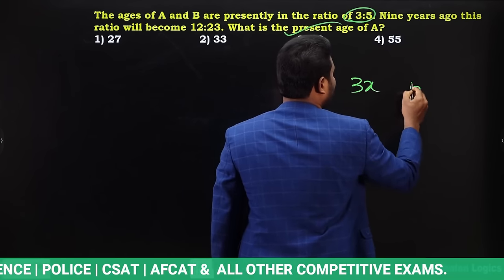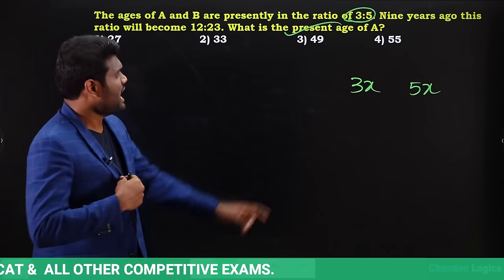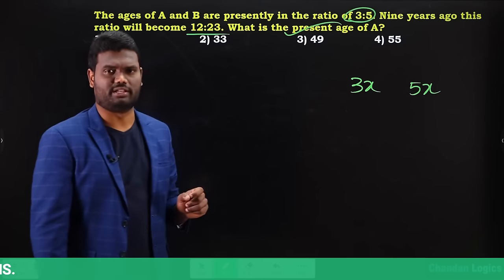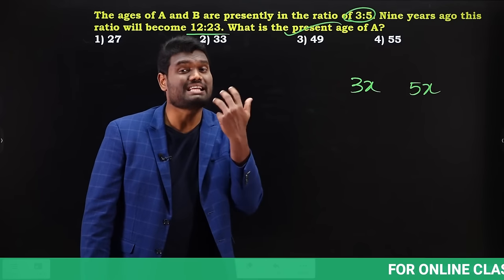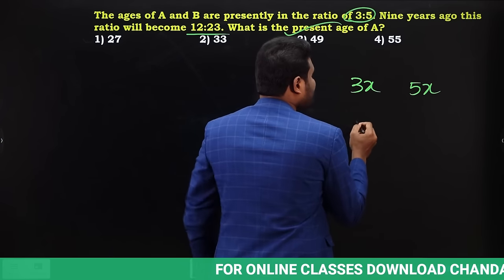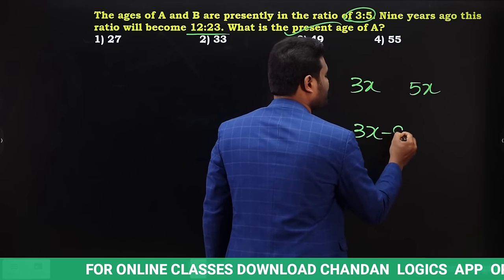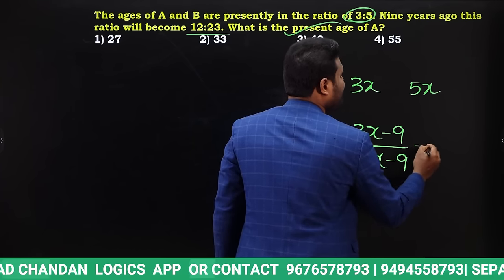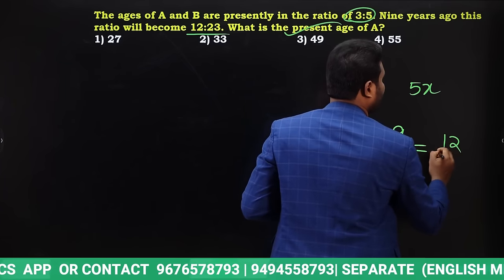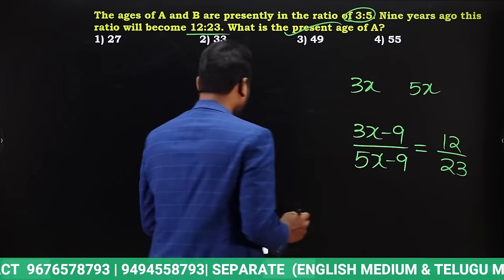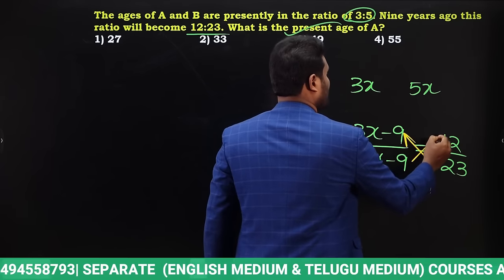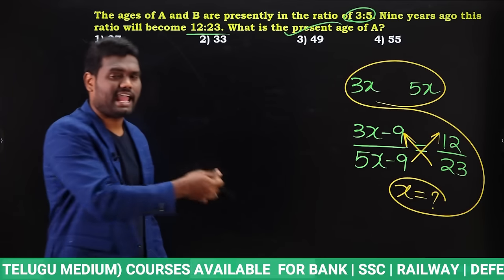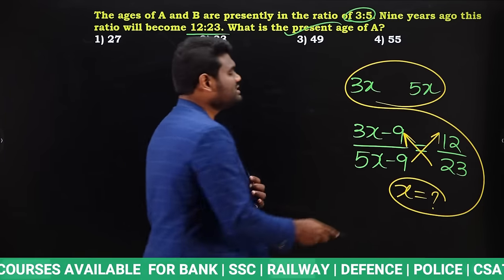Nine years ago means we subtract, so A's age becomes 3x minus 9 and B's age becomes 5x minus 9. The ratio nine years ago is 12:23. We do cross multiplication to find x, and once we know x we can find the ages of A and B. This is the standard method most students use.